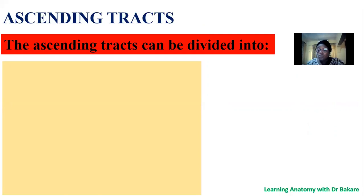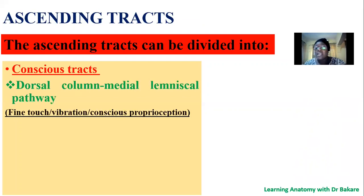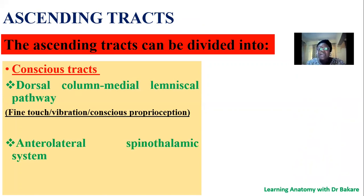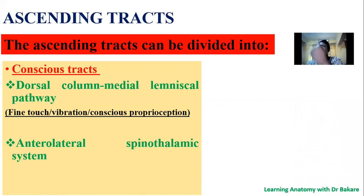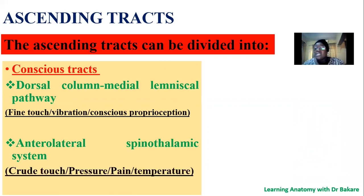The ascending pathway can be broadly divided into two: the conscious tract and the unconscious tract. The conscious tract — perceptions we are aware of — can be further divided into the dorsal column medial lemniscal pathway and the anterior lateral spinothalamic system. The dorsal column medial lemniscal pathway is responsible for fine touch, vibration, and conscious proprioception. A good example of conscious proprioception is closing our eyes and still being able to touch our nose. The anterior lateral spinothalamic system is for crude touch, light touch, pressure, pain, and temperature. All these tracts end in the cerebral cortex.